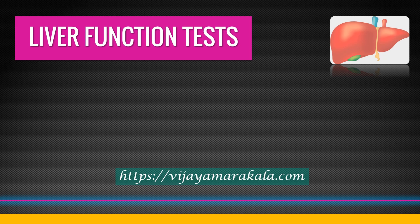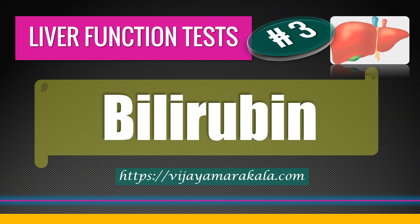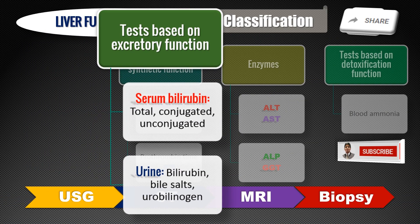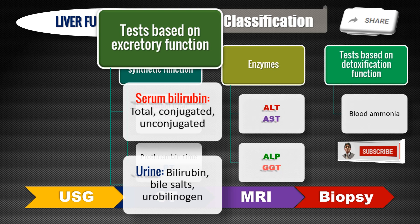Welcome back to this video series on liver function tests. This is the third video, and today I am going to explain bilirubin and bile salts. In the last video we learned classification of liver function tests, so today I am going to explain tests based on excretory functions of the liver — mainly serum bilirubin, urine urobilinogen, and bile salts. Just before going into those tests, I am going to explain the metabolism and formation and degradation of bilirubin very briefly.